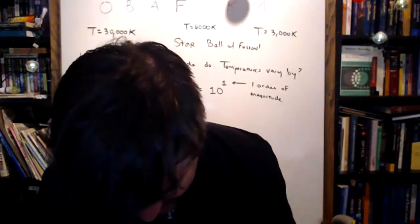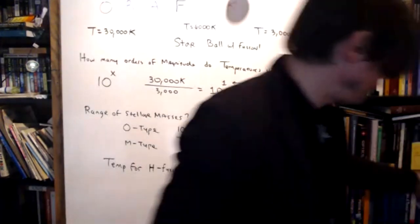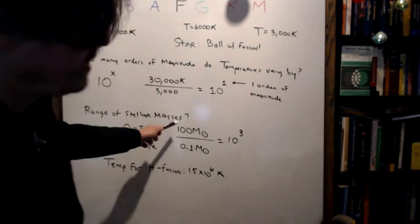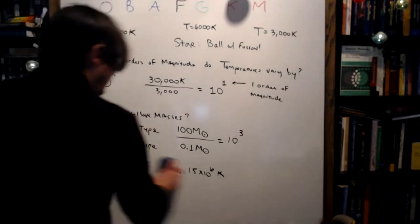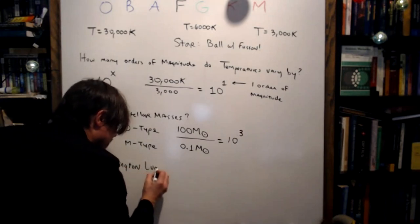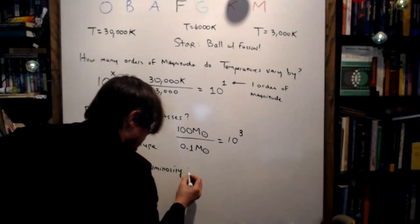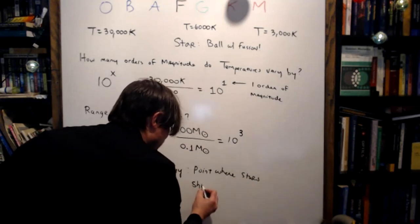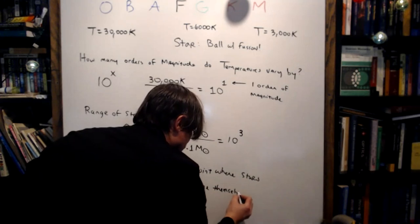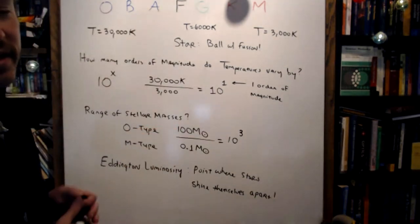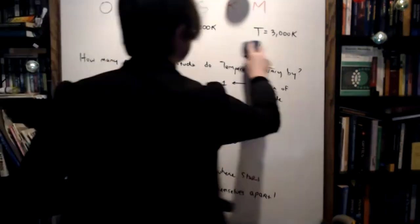The phenomenon is called the Eddington luminosity — the point where stars shine themselves apart. And 100 solar mass stars are basically close to that tipping point. Now let's talk about ranges of stellar radii.